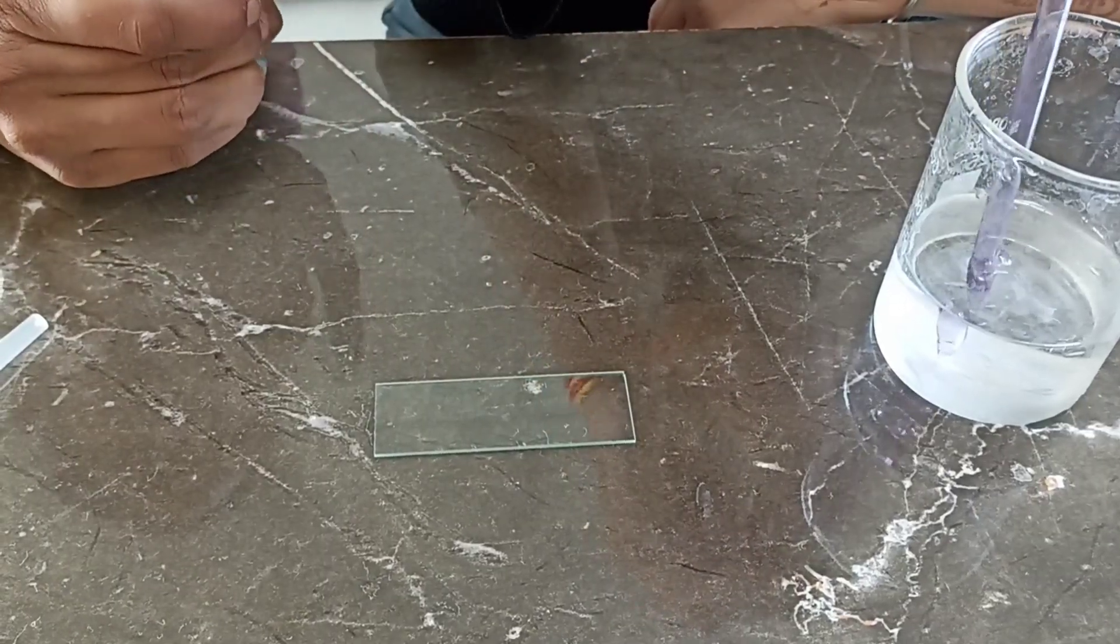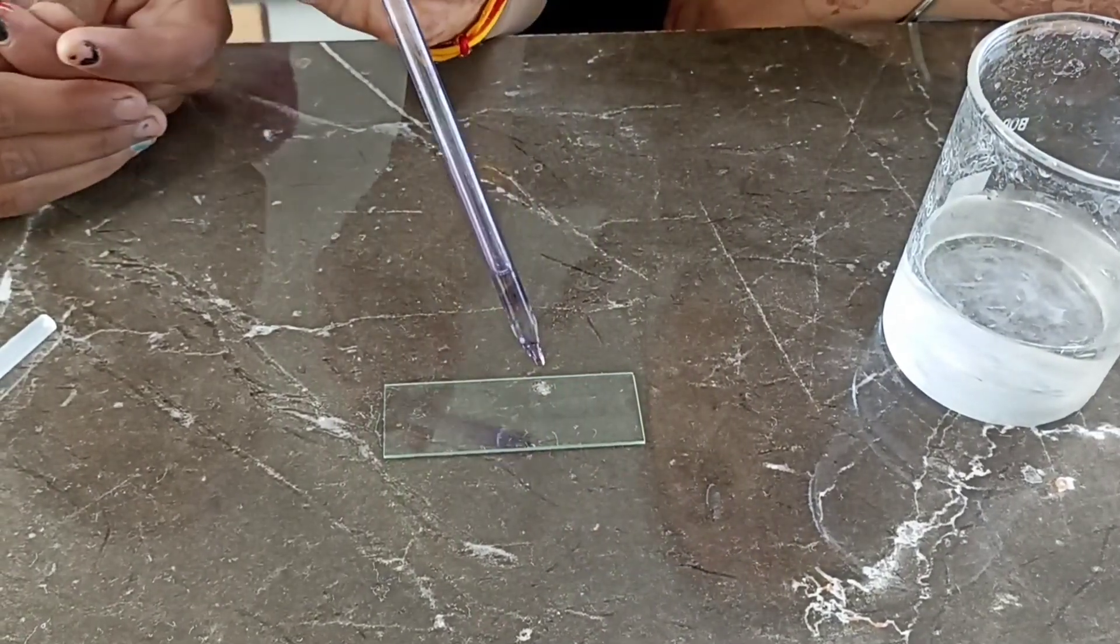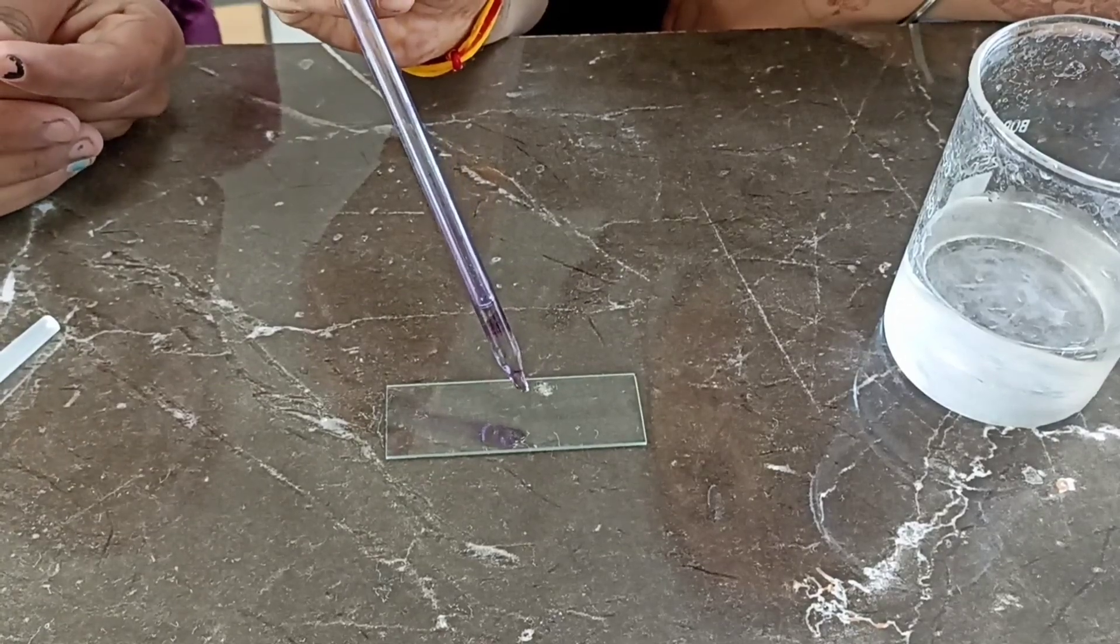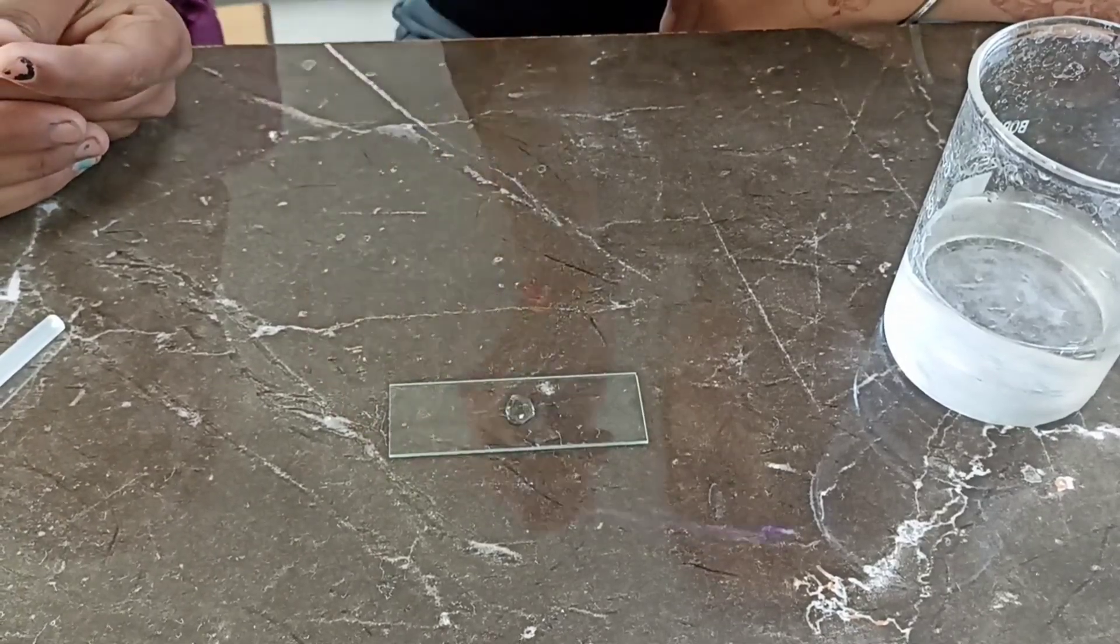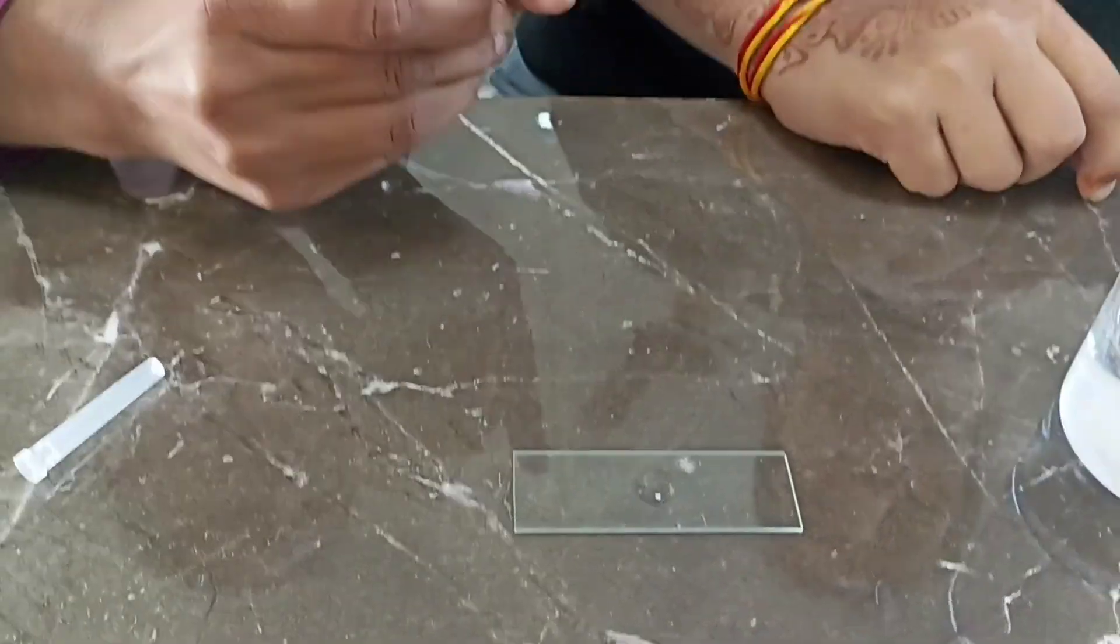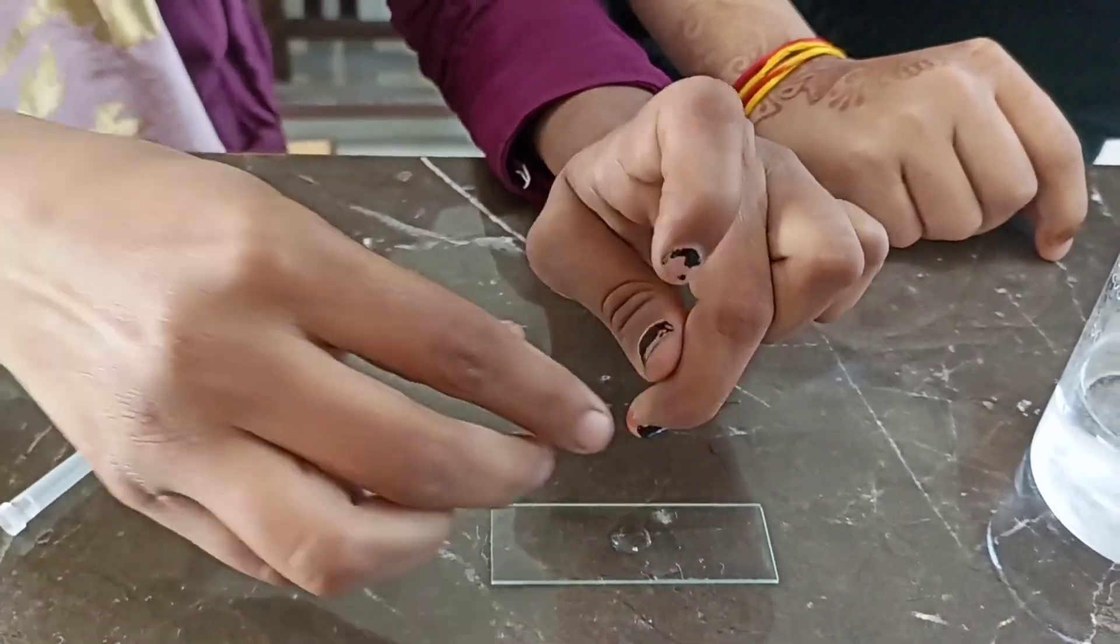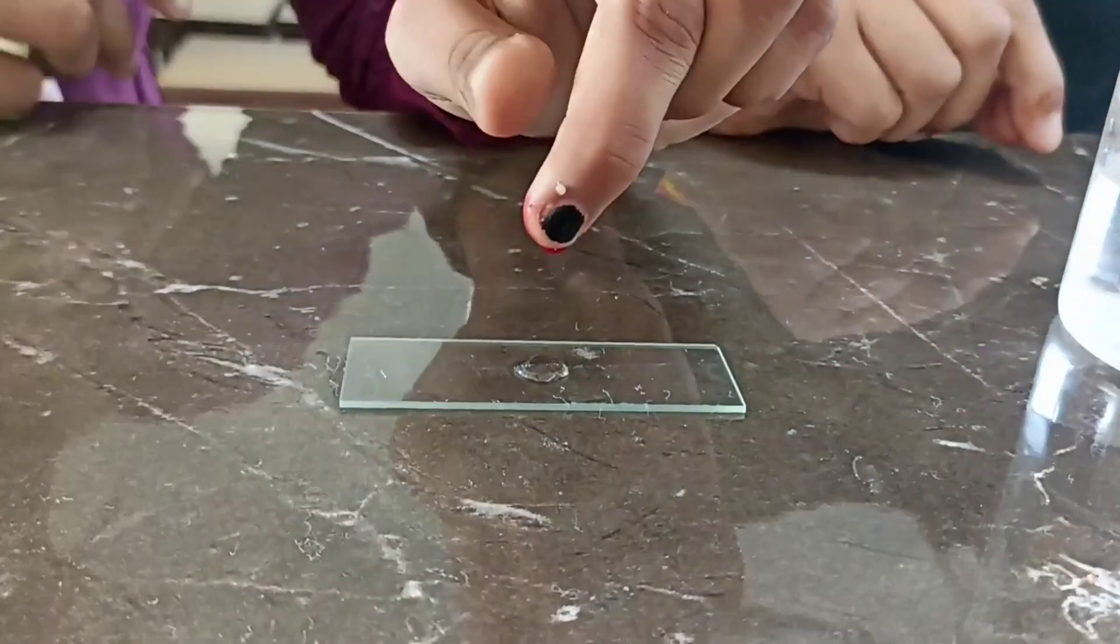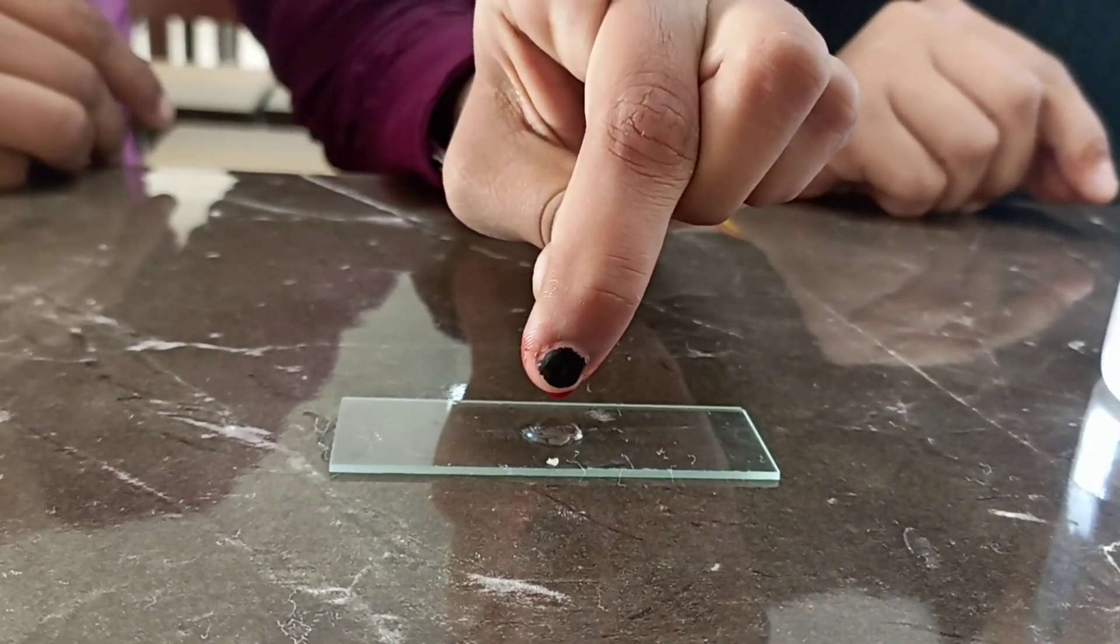Now take 1-2 drops of NaCl on the slide. On this drop, now add the blood. Avoid touching the slide.